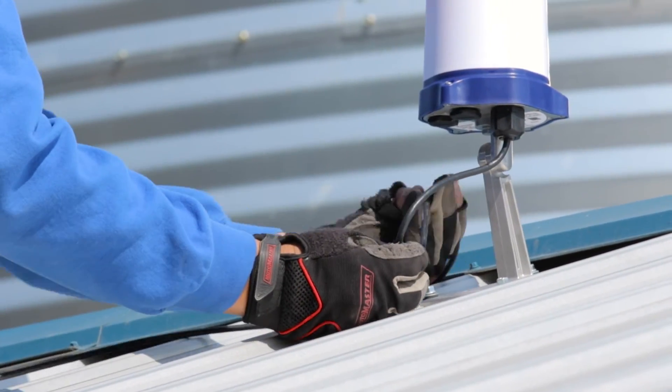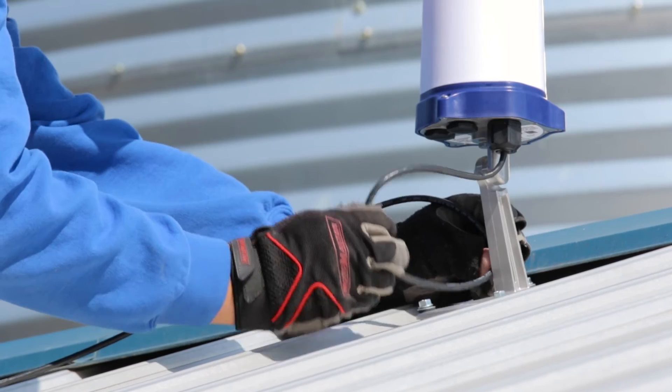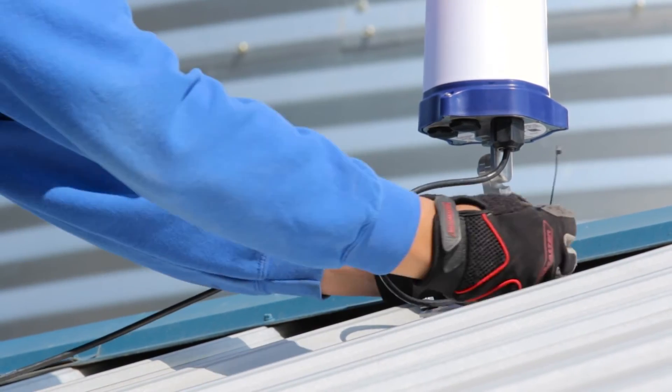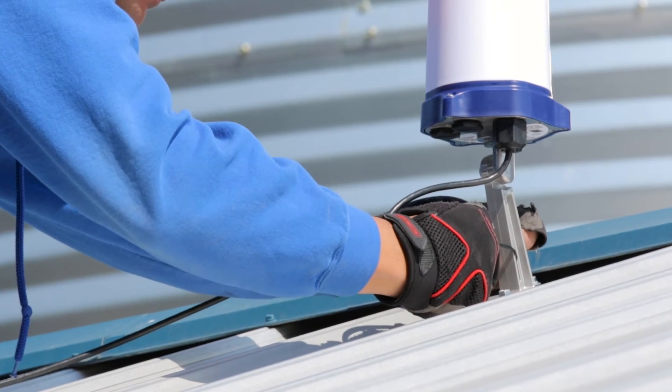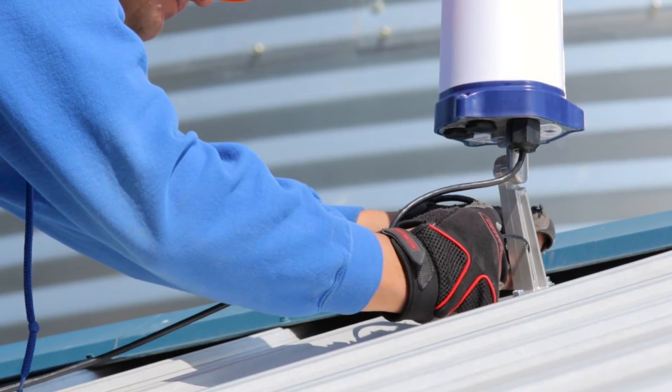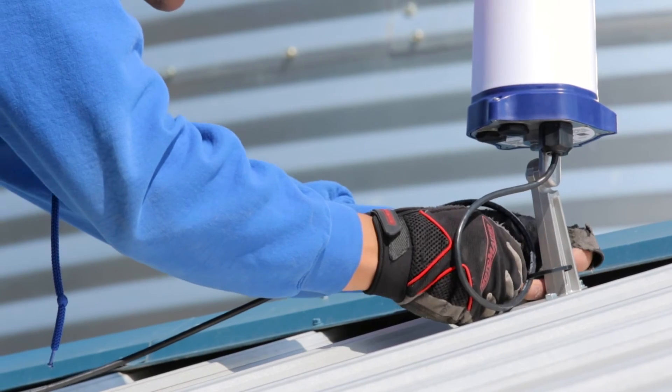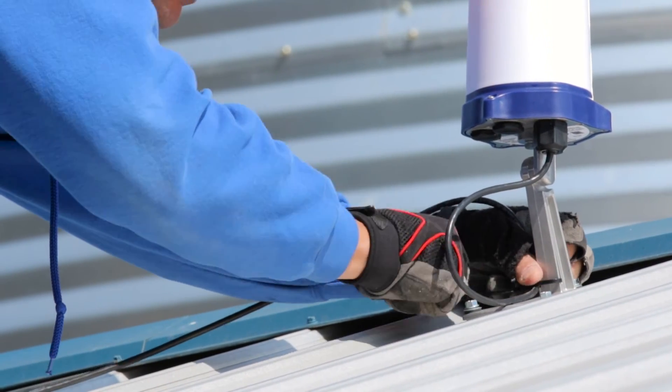After you've installed the Gateway Node, create a drip loop with the Ethernet cable coming out of the base of the node. Secure the cable using a tie wrap through the opening of the neck of the foot mount. The drip loop ensures water running along the Ethernet cable will not run into the Gateway Node.